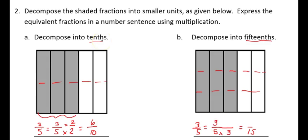Instead of having the original 3 pieces that were shaded, I've tripled the amount of pieces. Now, I have 9 pieces that are shaded. 3 fifths, then, is equal to 9 fifteenths.